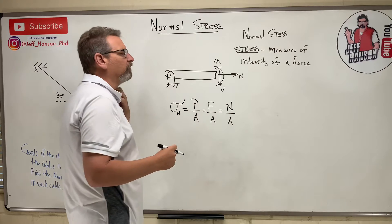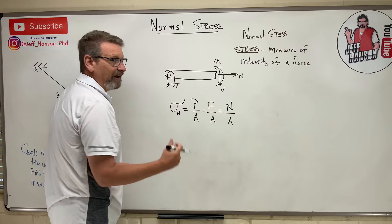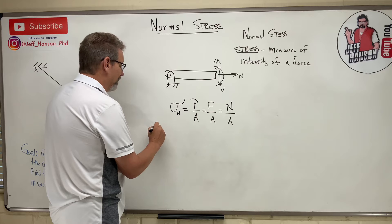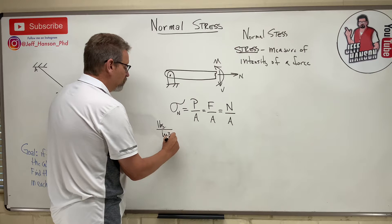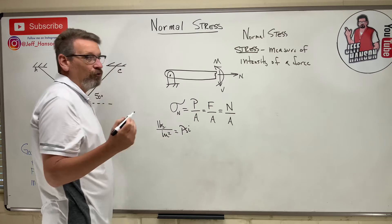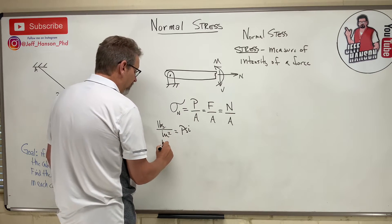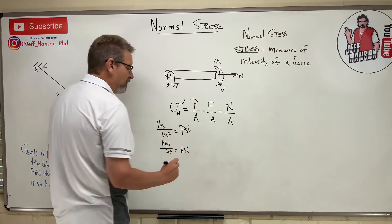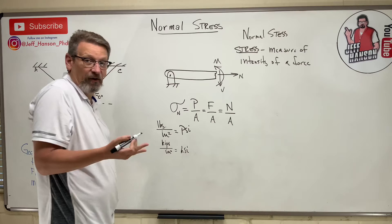That's really force over area, the normal force over the area. What are the units for this? In the English system, in freedom units, it would be something like pounds over inches squared, which is going to give you psi, pounds per square inch, or you would get something like kips per inches squared, which is ksi, kips per square inch or kilopounds per square inch.